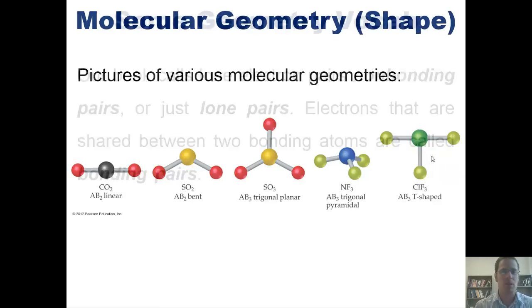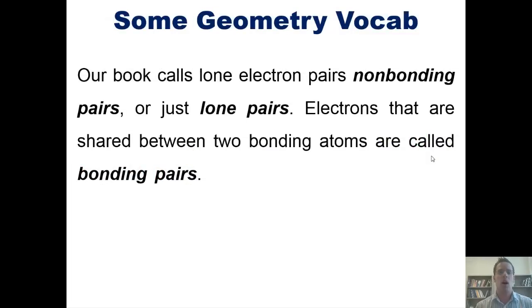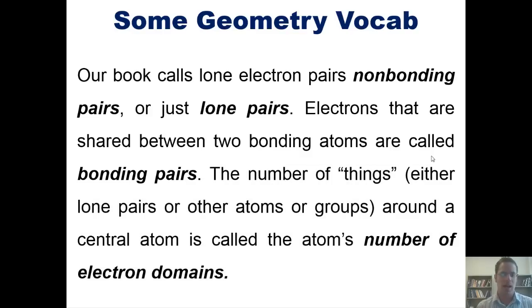Now, I have to teach you some geometry vocabulary. Our book, just so you know, happens to call lone electron pairs non-bonding pairs or sometimes just lone pairs. Now, that contrasts with electrons that are being shared between two atoms. If I have electrons that are being shared by two atoms, those are called bonding pairs. So the number of things around a central atom, which, and when I say things, I mean either groups or lone pairs or whatever, the number of things that are around that central atom happen to be called the atom's number of electron domains. So do you have those few vocabulary terms down? If not, pause this video and look at these terms until you've got them all down because it will become relevant later on.